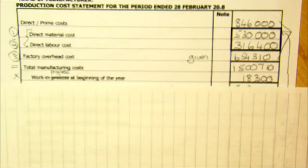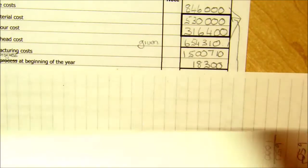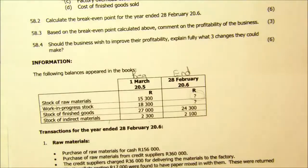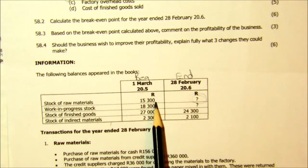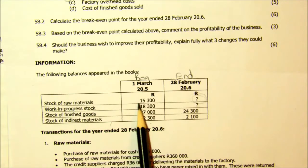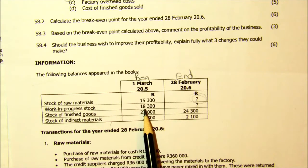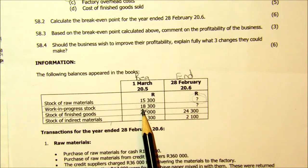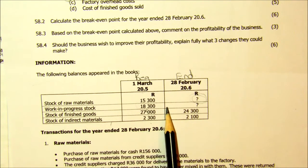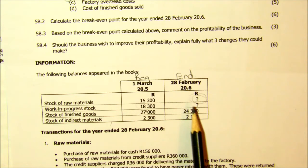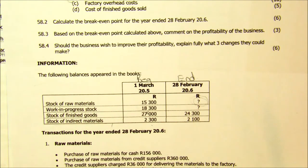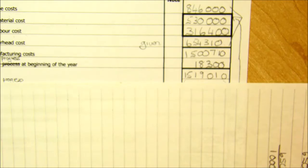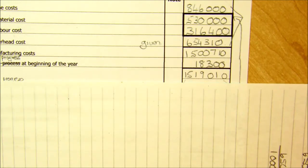So having got our total cost for the year, what we've spent, we need to see how much of that equals finished goods. The first thing we'll do is add on our work in progress from the beginning of the year. Amongst our opening balances, we had work in progress of 18,300 — that was the value of the goods that were in the production line from last year but had not yet been completed. You start the year by first completing those, and they go into finished goods first.